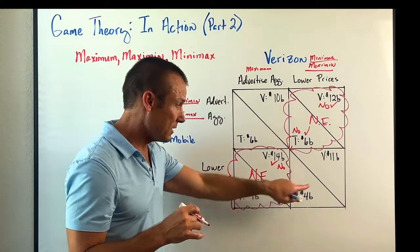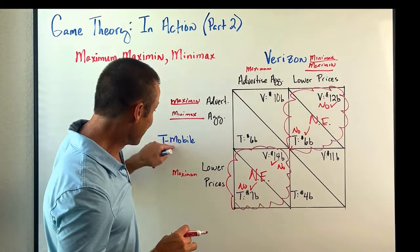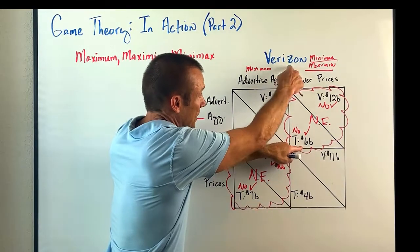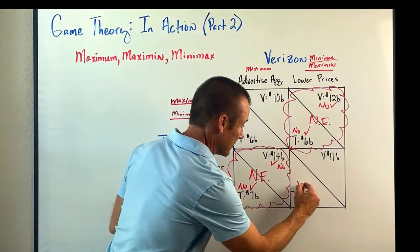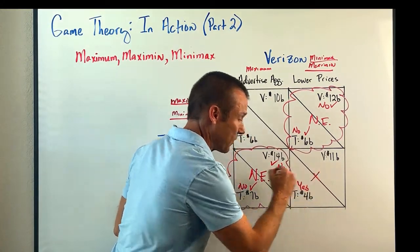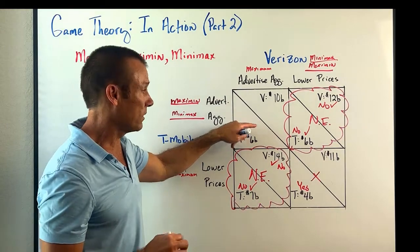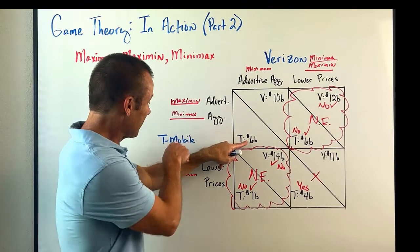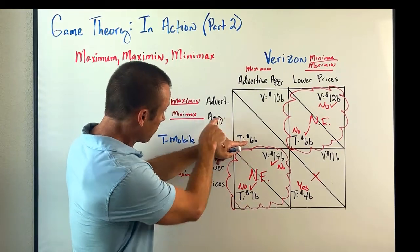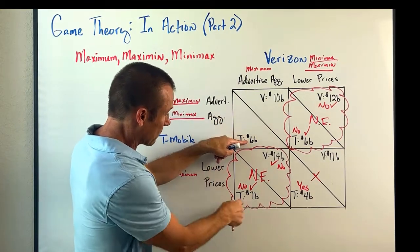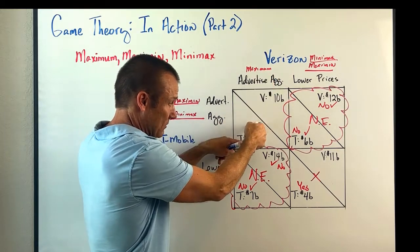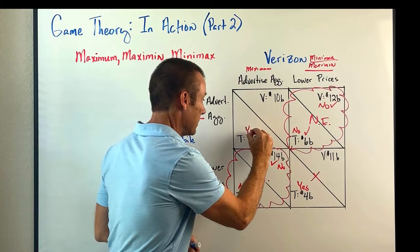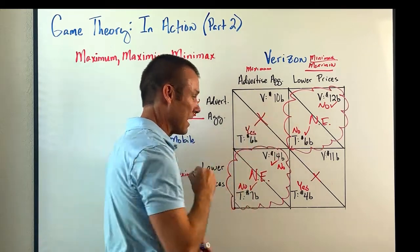Quickly checking the other two outcomes: in one case, T-Mobile would have an incentive to switch given Verizon played lower price — that rules it out as a Nash equilibrium. In the last outcome, T-Mobile would have an incentive to switch from advertise aggressively to lower price given Verizon advertised aggressively — the answer is yes, so that's not a Nash equilibrium either.